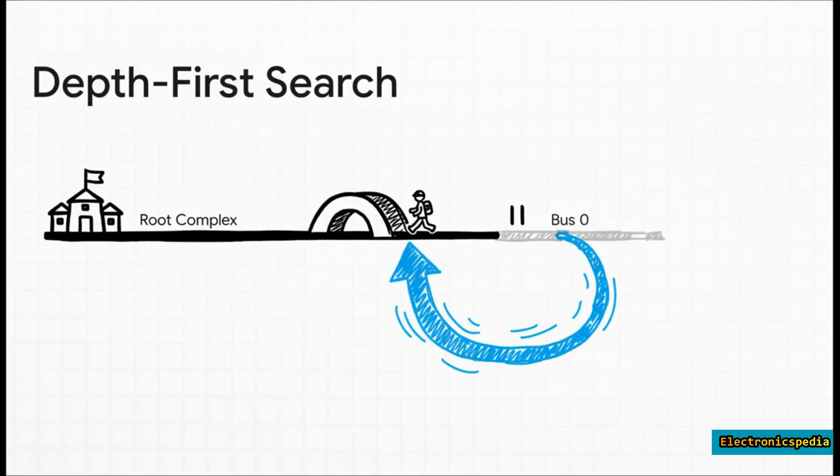The strategy it uses is a classic computer science algorithm called a depth-first search. Our explorer starts at base camp, which in the PCIe world is the root complex. That's the main hub inside your CPU that connects everything.